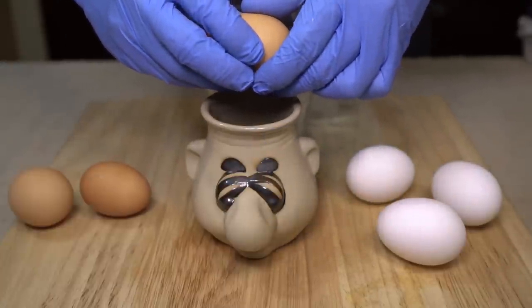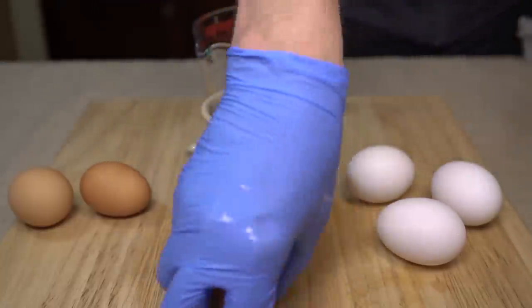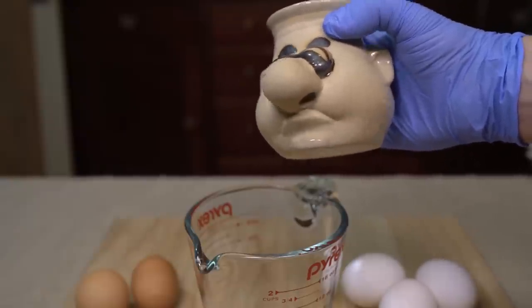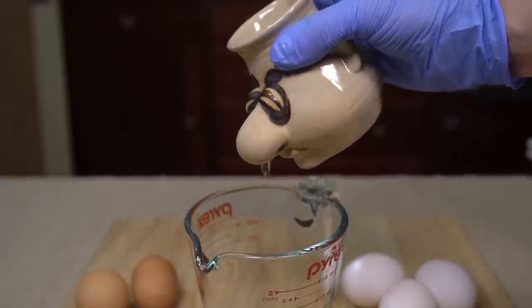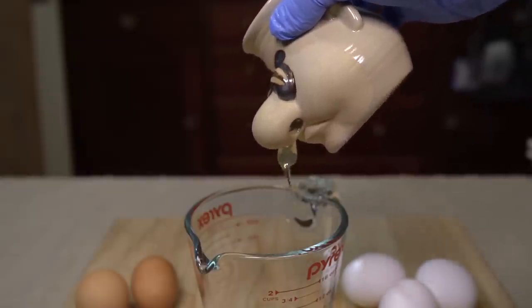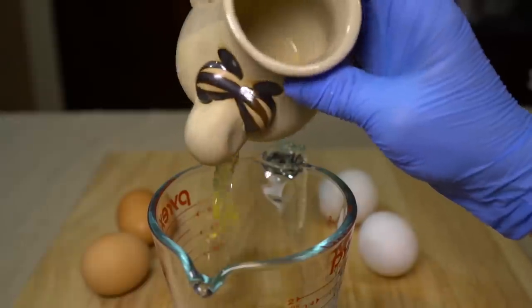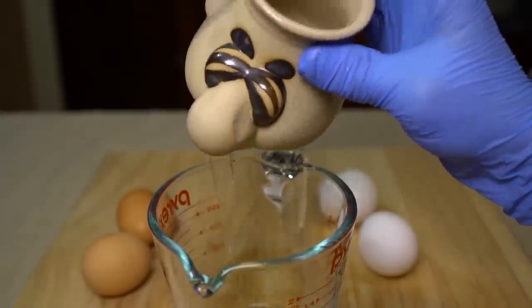To put this guy into action, all you've got to do is crack an egg or two directly into his waiting noggin. When that's taken care of, just give it a nice little tilt reminiscent of a water pitcher, and your egg whites should begin to delicately seep from his nostrils. If you find that you're having a hard time getting the egg whites out of the container, just give it a shake and you should see some results.